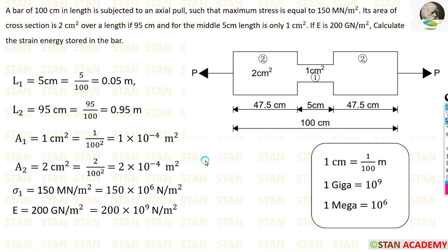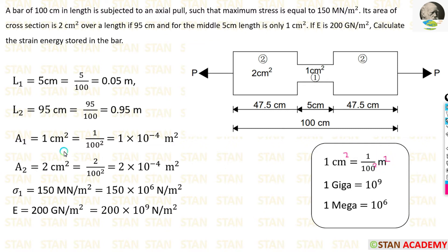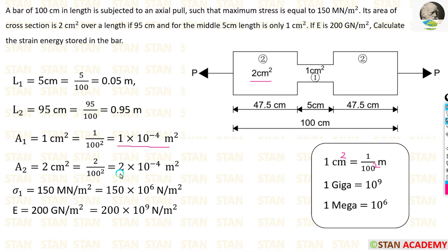Now we need to convert the areas. The middle portion area A1 is 1 centimeter square. Since 1 centimeter equals 1 by 100 meter, 1 centimeter square equals 1 by 100 squared meter square, giving 1 into 10 power minus 4 meter square. Then A2, the area of the bigger portion, is 2 centimeter square, which converts to 2 into 10 power minus 4 meter square.